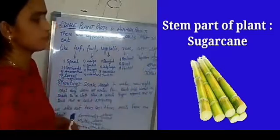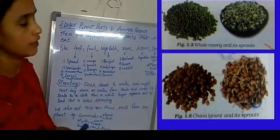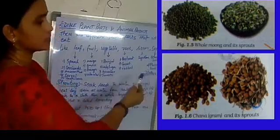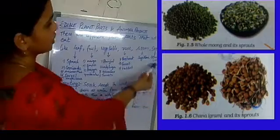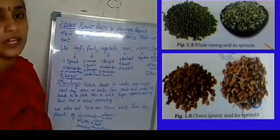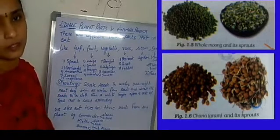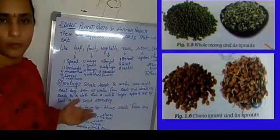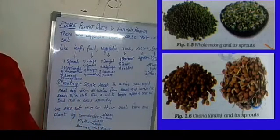The next edible part of the plant is seeds. We know so many seeds that are edible — chana seeds, moong dal seeds, peas, etc. Chana seeds are Bengal gram seeds; moong dal seeds are green gram seeds. Generally the seed part we consume by sprouting them. Sprouted seeds have more protein in them, so sprouted seeds are good for our growth. More protein is good for body building.